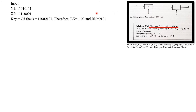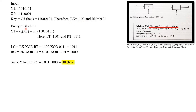We have the two parts of the input, that is X1 and X2. We are given the key in hexadecimal format and we convert it into binary, denoting LK and RK as shown here. Let's encrypt. We will take X1 first and encrypt it with the key K.